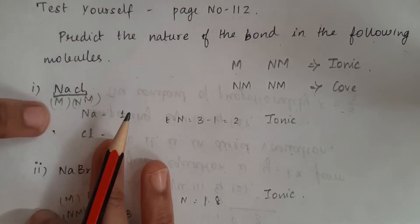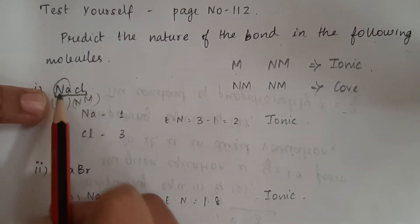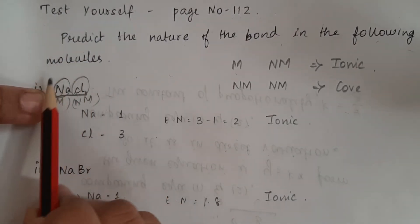So sodium chloride — sodium is one atom, chlorine is one atom.